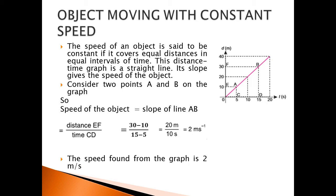Object moving with constant speed. The speed of an object is said to be constant if it covers equal distance in equal intervals of time. The distance-time graph is a straight line, and its slope gives the speed of the object. You can consider two points A and B on the graph, so the speed is equal to the slope of line AB.